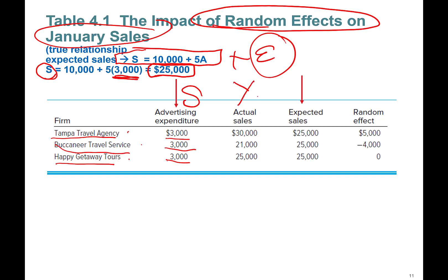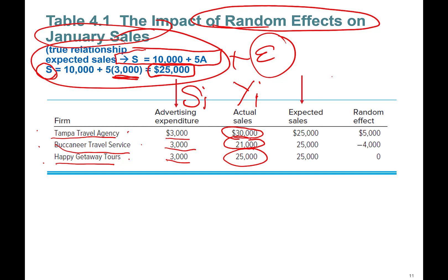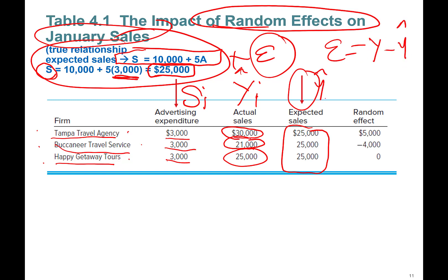Actual sales — the real Y_i experienced — differ by company. Tampa Travel Agency actually made thirty thousand dollars in sales. Buccaneer Travel Service made twenty-one thousand. Happy Getaway Tours made twenty-five thousand. Expected sales from the model predict all of them should have twenty-five thousand dollars in sales. The random effect equals actual sales minus expected sales — what the model predicted.